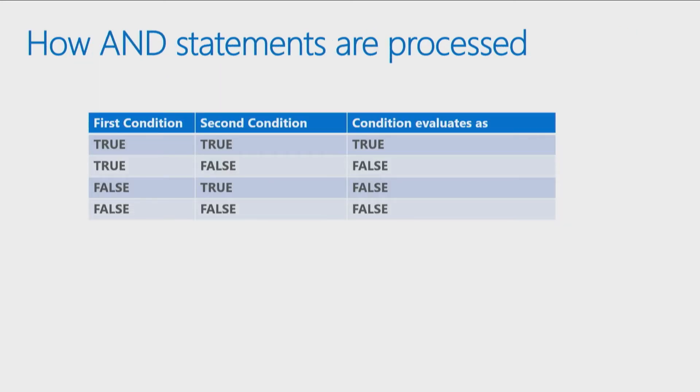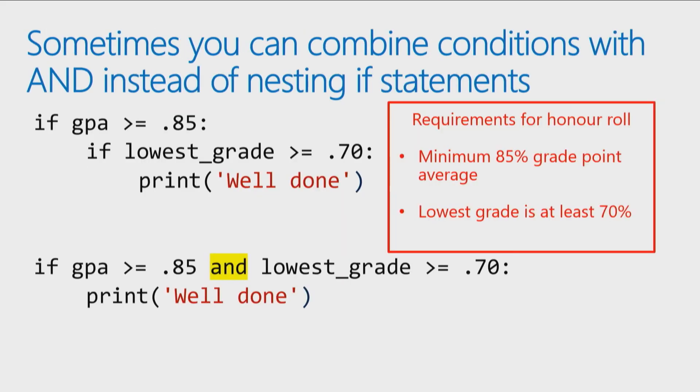The way AND statements are processed is both conditions must be true for the condition to be evaluated as true. So if we go back to this, if we had a GPA that was not over 85, let's say your GPA was 70 percent, well, then you are not going to make the honor roll. If your lowest grade is a 60 percent, you don't make the honor roll. So having one or the other isn't good enough, both conditions have to be met for the operation to be considered true, and the statement print well done to execute.